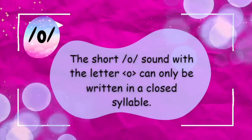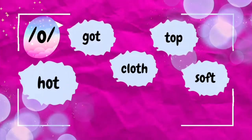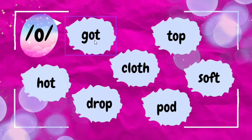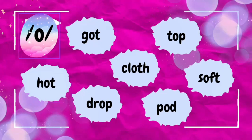Let's begin with when we should use the letter O for the AW sound. The short AW sound with the letter O can only be written in a closed syllable. If you hear the sound of letter O in words like GOT, it's saying AW — because you have a consonant right after the letter O that's stopping it from saying its long sound. If you remove the T from GOT, it becomes GO — an open syllable — and the O says its long sound. So in short, if you have a closed syllable and you hear the AW sound, write it with the letter O.